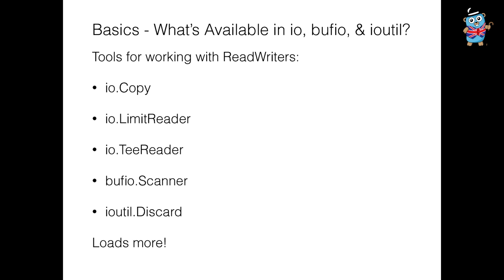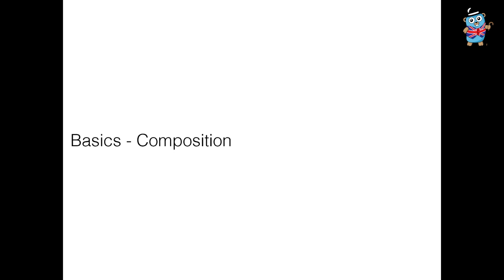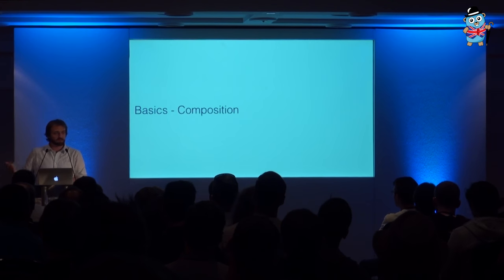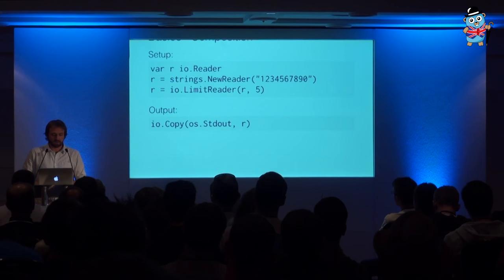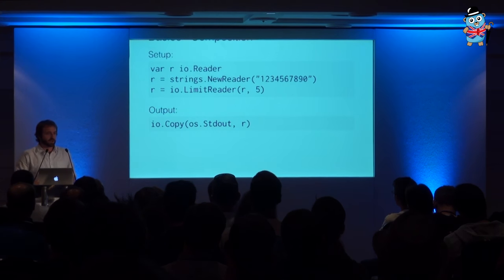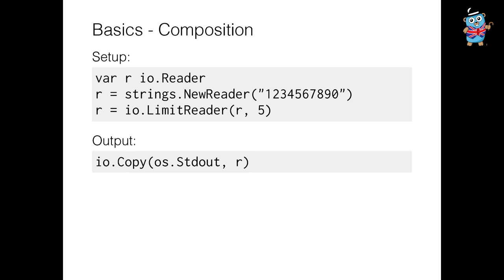So let's start with a bit of basic composition. Building your own abstractions around readers is really easy, and composing them is pretty easy. They're very good for interchanging, so let's look at some basic usage. We can declare an io.Reader and just do it from a static source or a string.